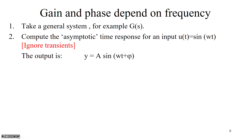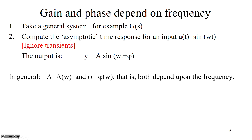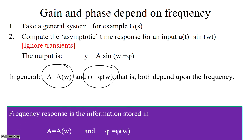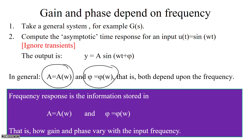If you take a general system G(s) and compute the asymptotic time response for some signal u = sin(ωt), the output is going to be A·sin(ωt + φ). In general, the amplitude A and the phase φ both depend upon frequency. So as you change frequency you get a different amplitude and a different phase. Frequency response is simply the information stored in these two variables: A(ω) and φ(ω) — how gain and phase vary as the frequency of the input changes.